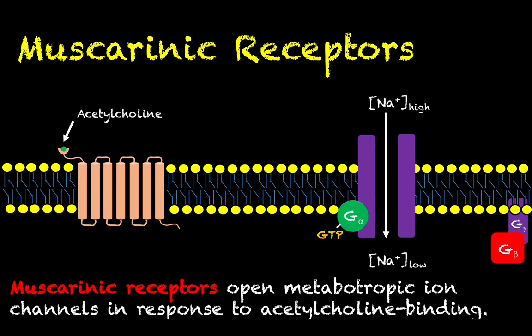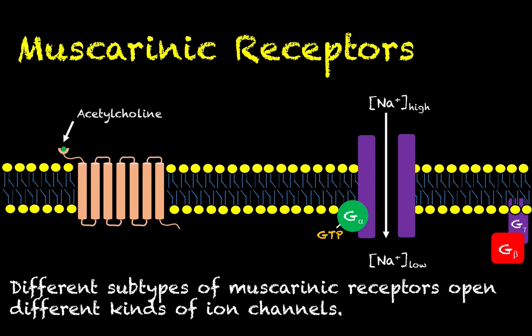Take a muscarinic receptor for example. A muscarinic receptor is a type of acetylcholine receptor, meaning it is a receptor that responds to the ligand acetylcholine, which is a neurotransmitter. Muscarinic receptors open metabotropic ion channels in response to the binding of acetylcholine — the muscarinic receptor is a G protein-coupled receptor. Activation of the G alpha protein causes an ion channel to open; specifically a sodium channel, and sodium flows from the extracellular fluid to the intracellular fluid, causing the membrane potential of this cell to become more positive.